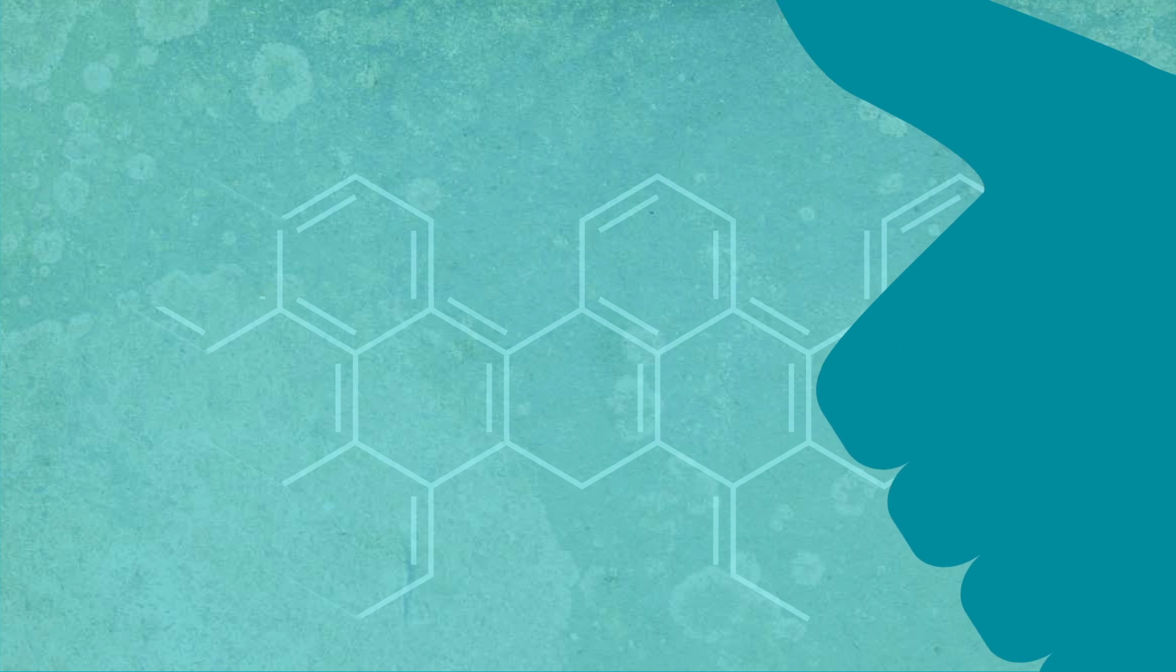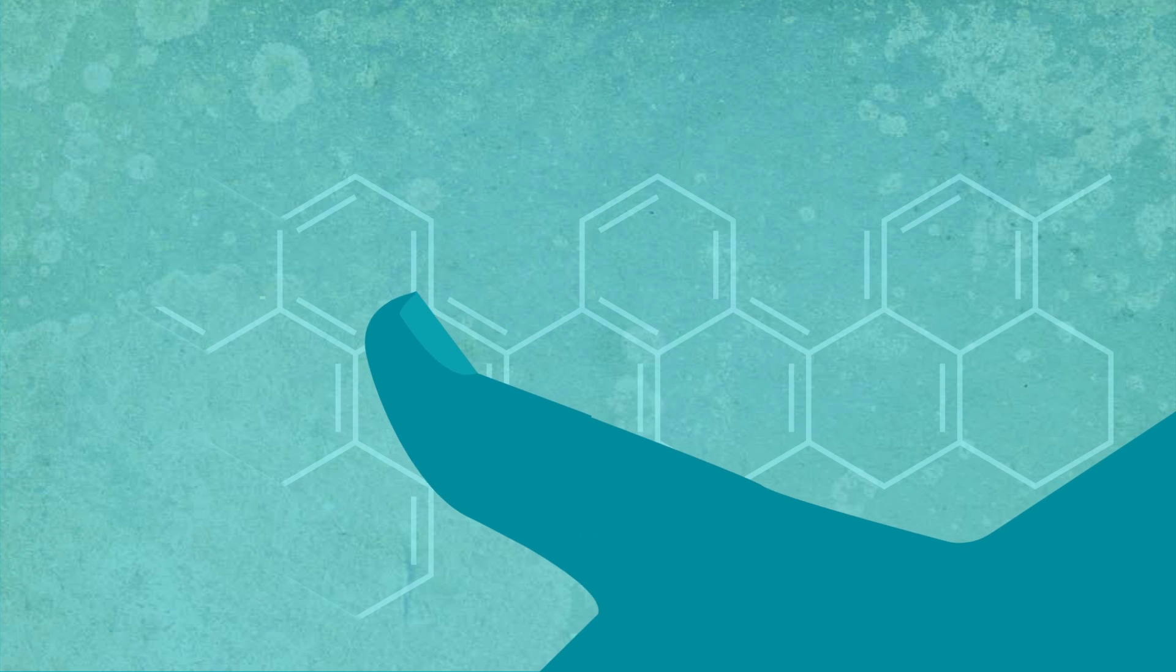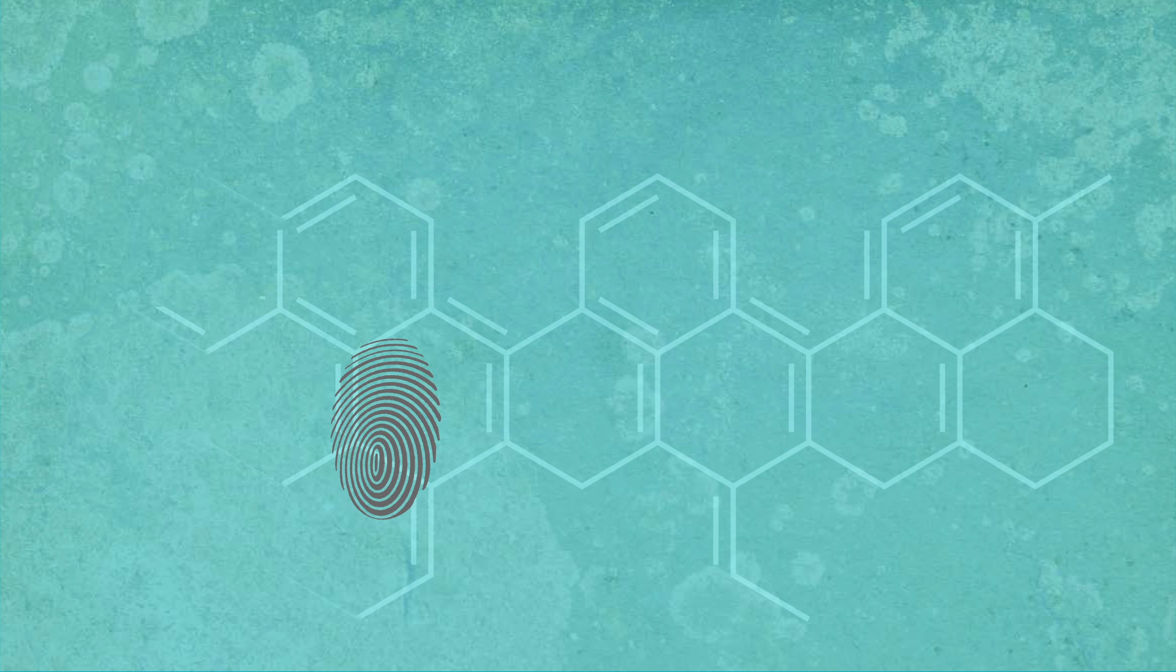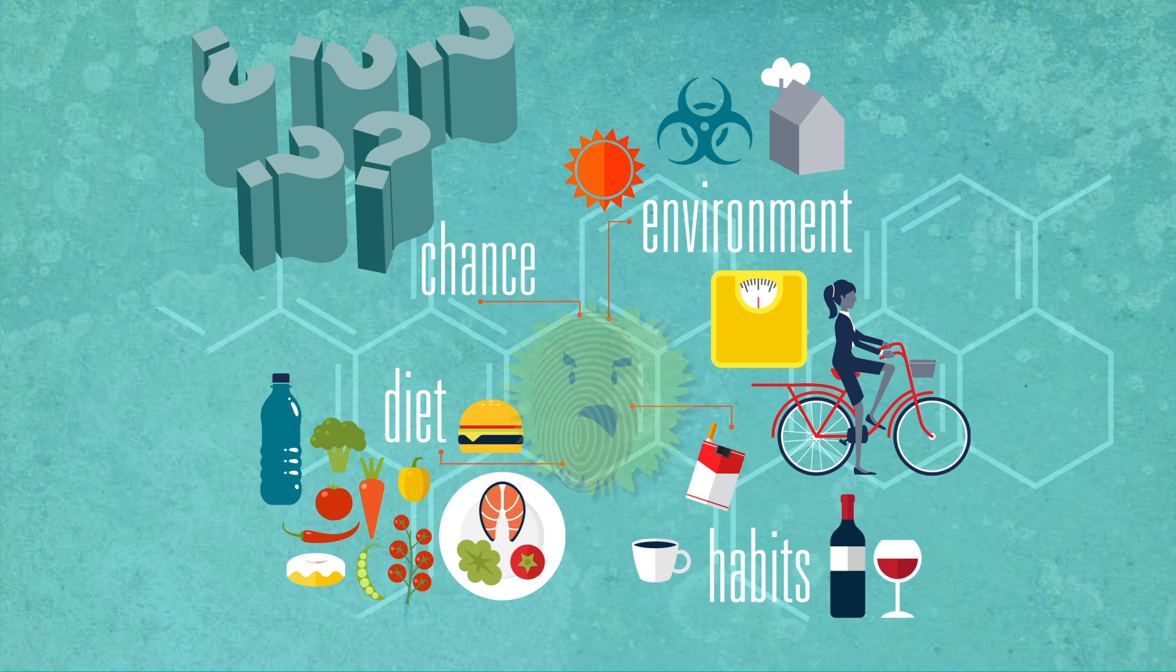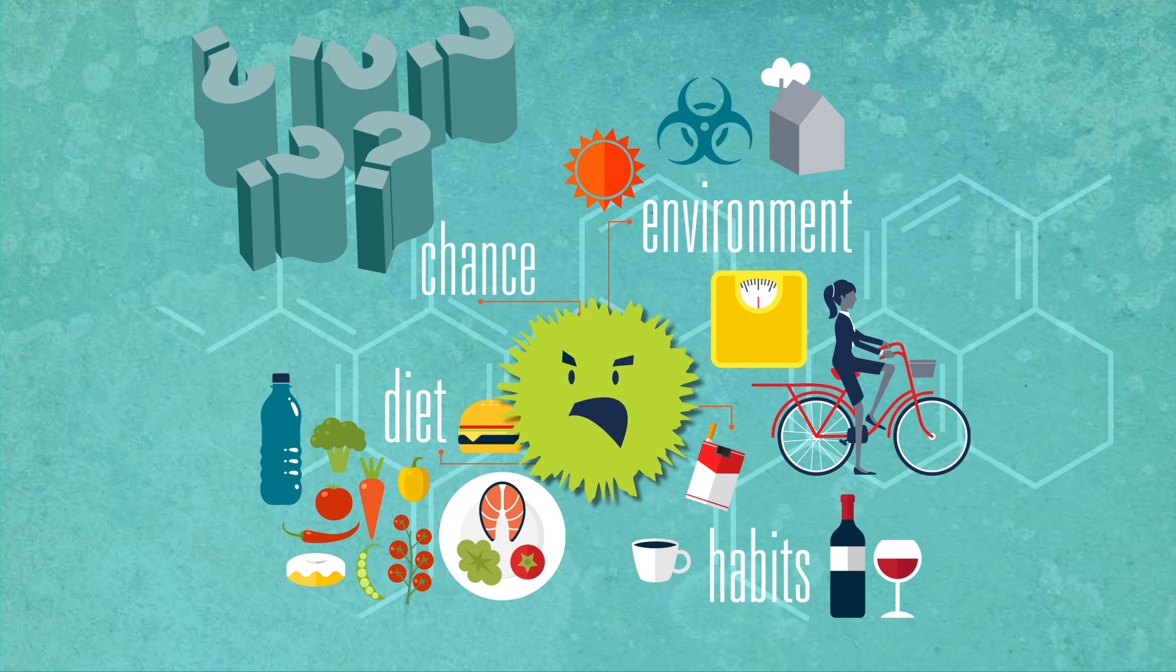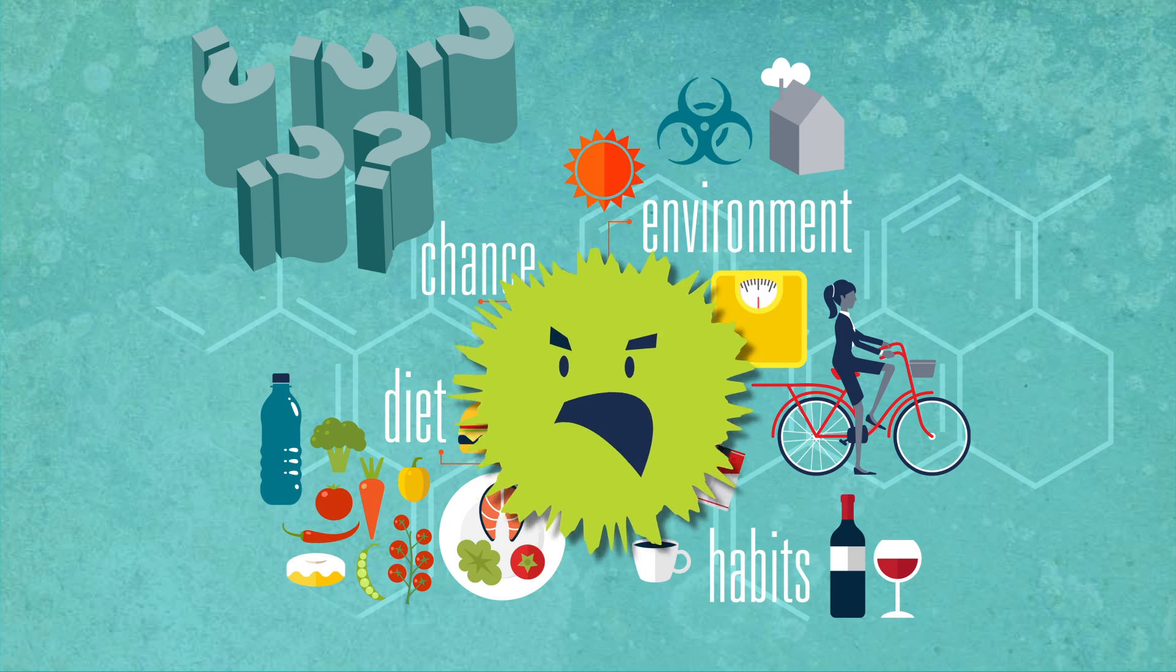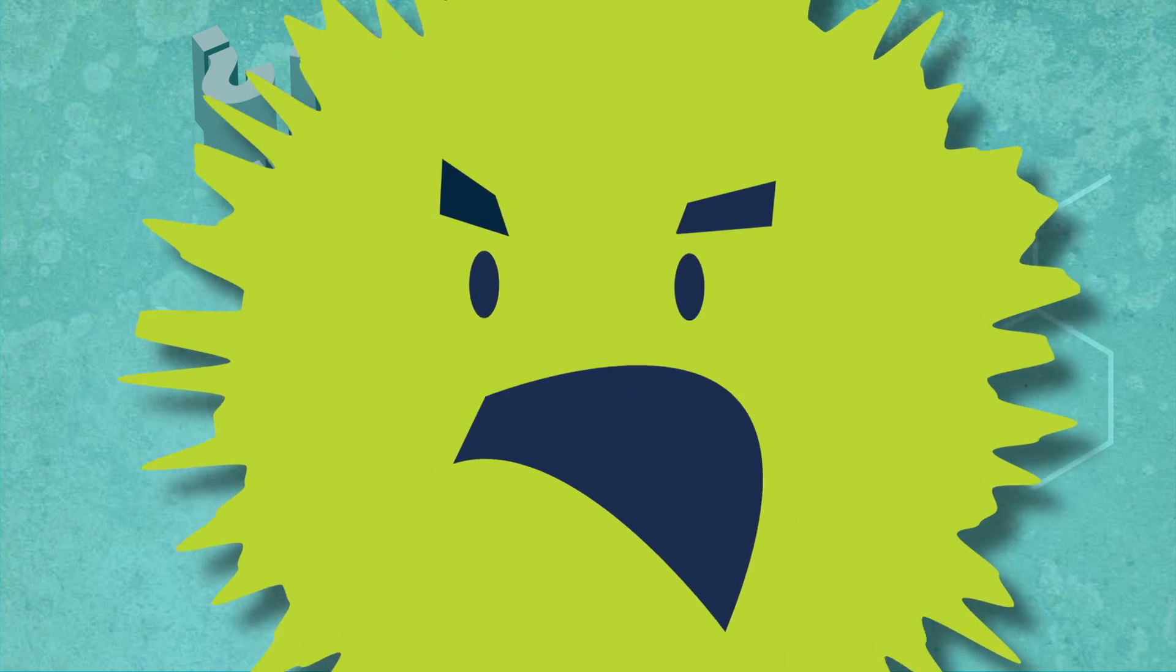As you grow and the cells in your body routinely multiply, other mutations can happen due to your environment, diet, habits, or just plain chance. If these mutations occur in the wrong places, they can send faulty signals to your cells. This may cause cancer or other diseases to develop.